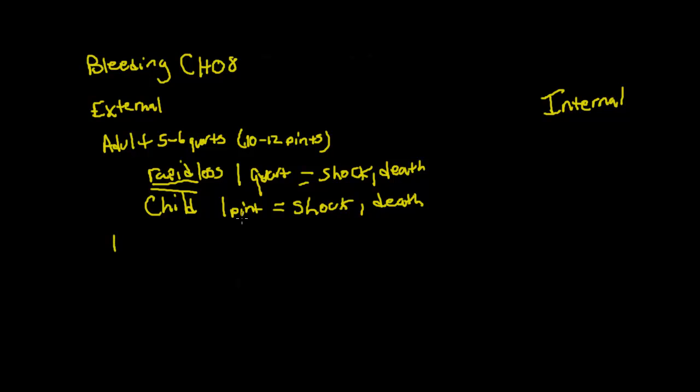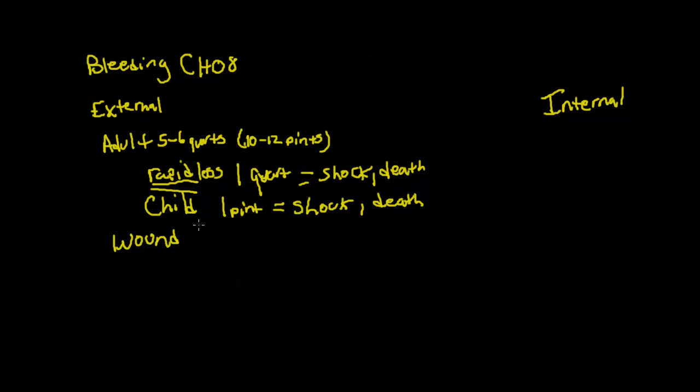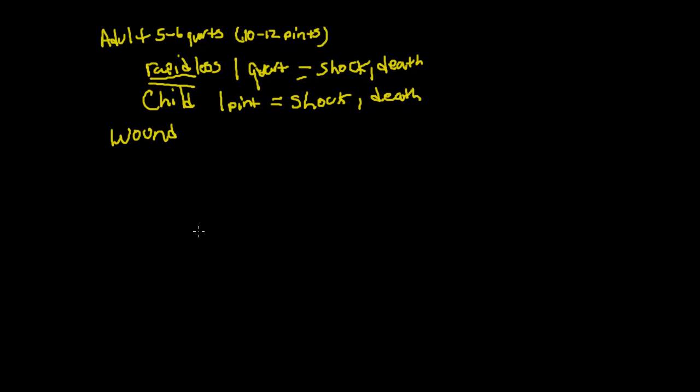With external bleeding, you're going to need some sort of wound, some sort of open wound there to allow the blood to escape. There are different types of bleeding. Let's talk about arterial, and then we have venous, and then we have capillary.